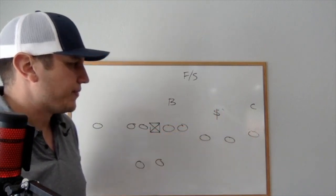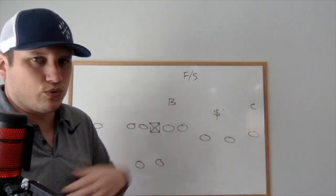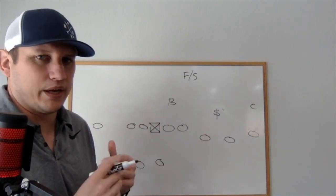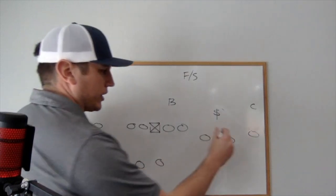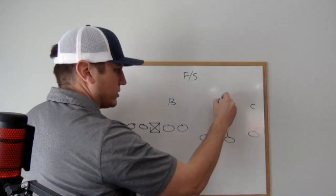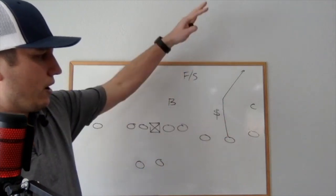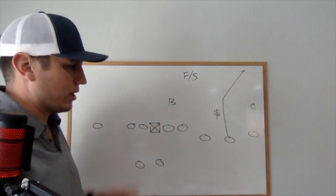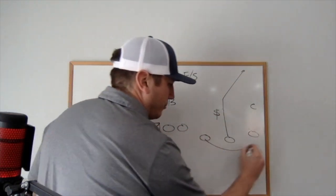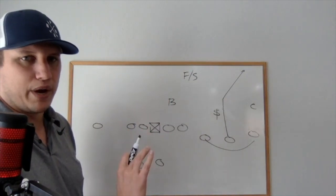So with our snag concept, we take number one and he's going to be the guy that's running the snag sitting up in that intermediate area. Number two for us is going to clear out and he's running a corner. We're at about eight to ten yards running a corner, trying to really clear out for our number one receiver who is going to be running that snag route. Number three for us is running a bubble, occupying the flat.